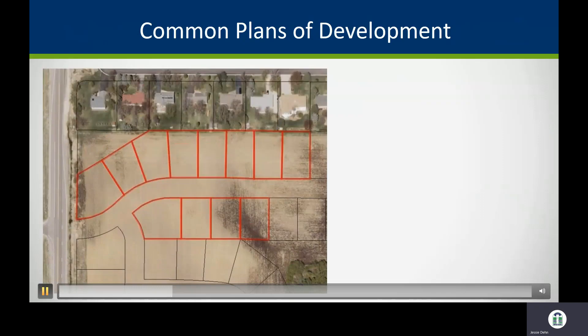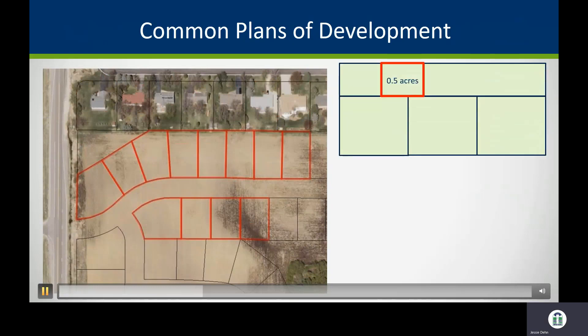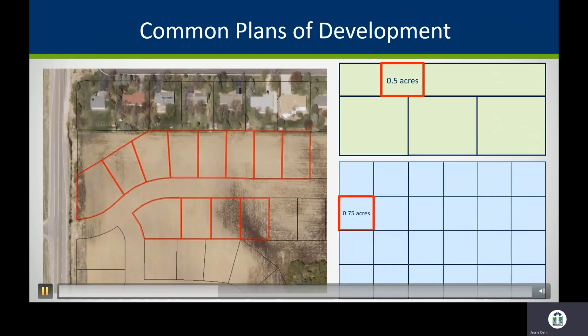A common plan of development or sale — such as a subdivision-based project or combination of construction activities — is an area where multiple continuous, separate land disturbance activities may occur on different schedules but under one proposed plan. For example, if you're building on a half-acre residential lot in a 10-acre development, or putting in a fast-food restaurant on a three-quarter-acre parcel that's part of a 20-acre retail center, that would be considered a common plan.